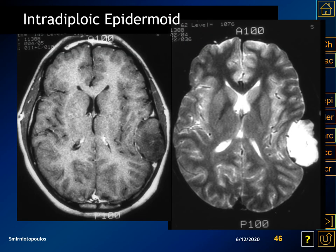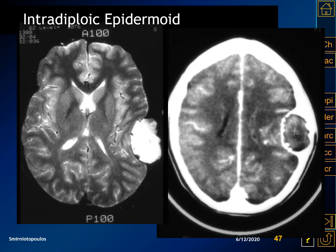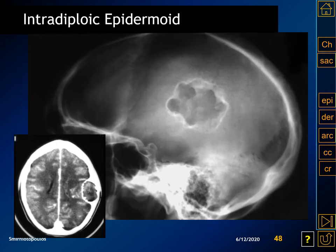Here is another example of an intra-diploic epidermoid inclusion cyst — a non-enhancing, water-like mass but not identical to water on T1 and T2-weighted images. On CT, the contents are somewhat heterogeneous but there is a rim of reactive bone around the outside because this is a very slowly growing expansile lesion. The lateral radiograph beautifully illustrates the reactive rim of bone around the outside of the slowly expanding intra-diploic epidermoid inclusion cyst.